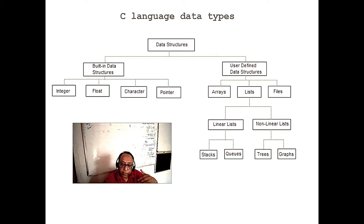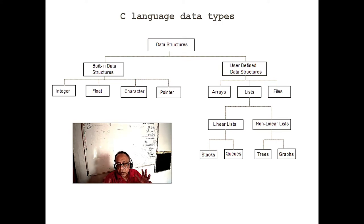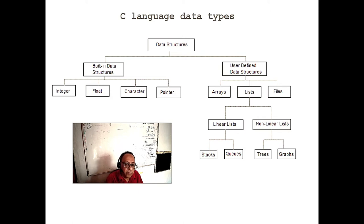C was developed when memory was very costly — around 1961 and 1962 by Dennis Ritchie and Ken Thompson. At that time memory was too costly, so they always focused on conserving memory. But memory is now much less costly.